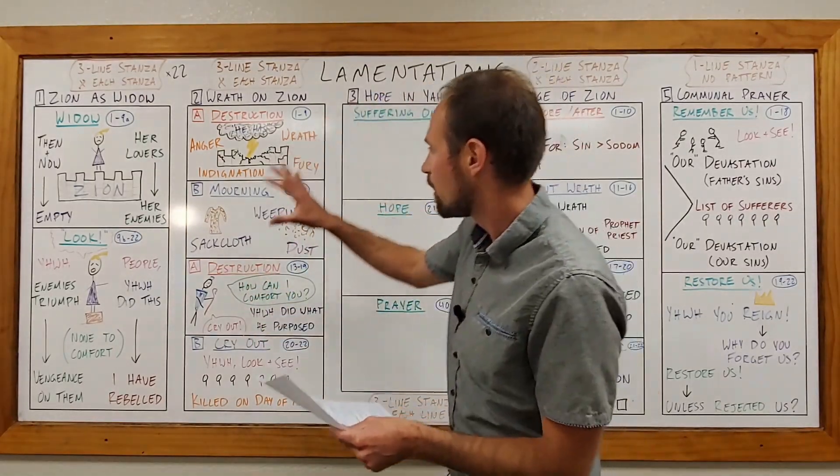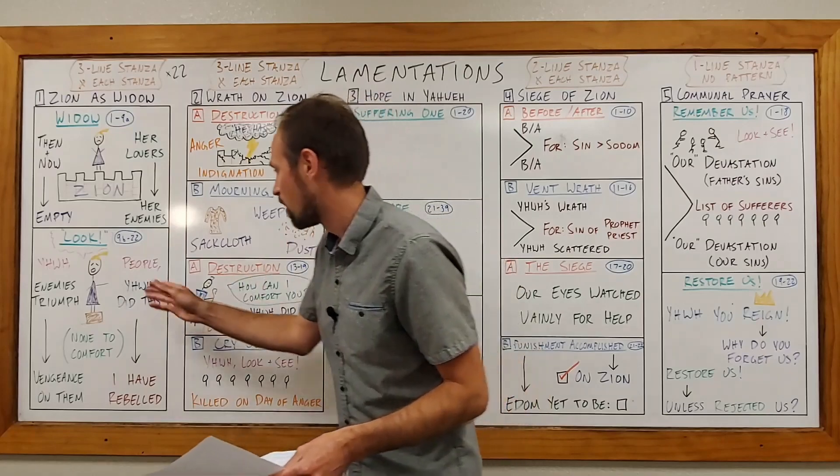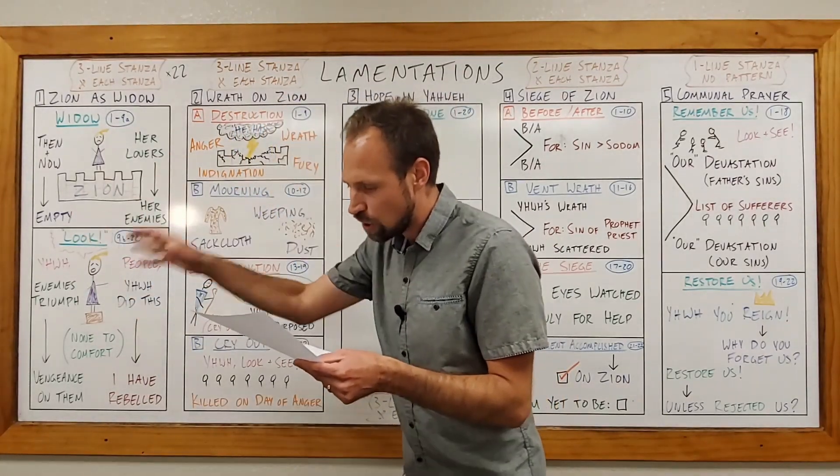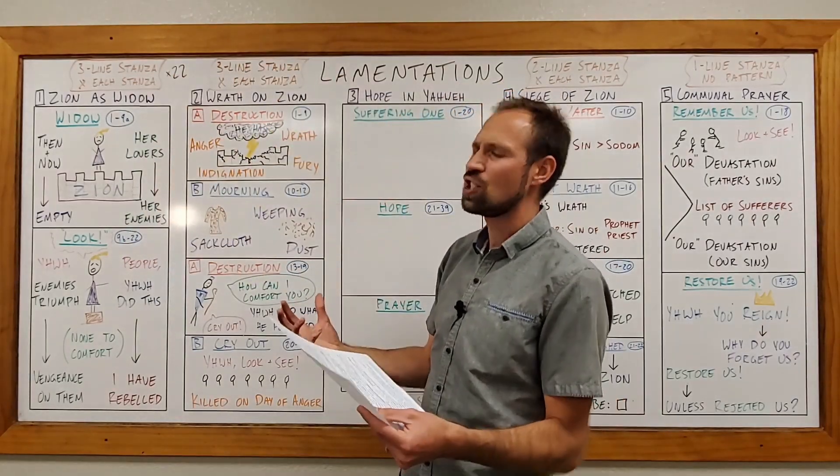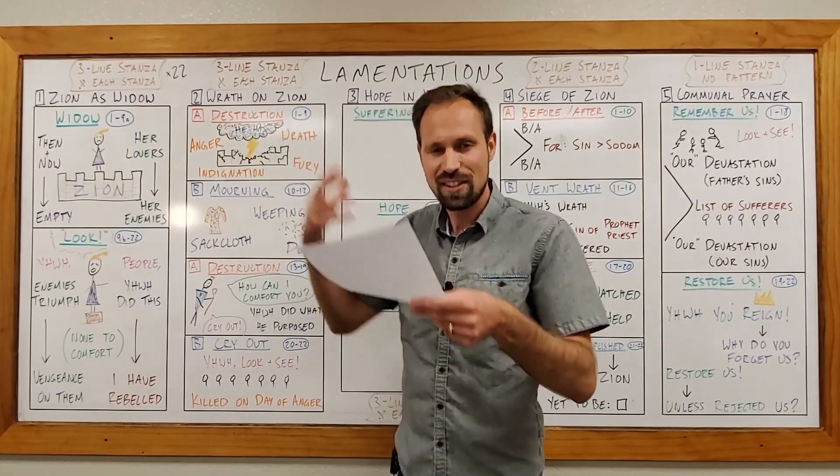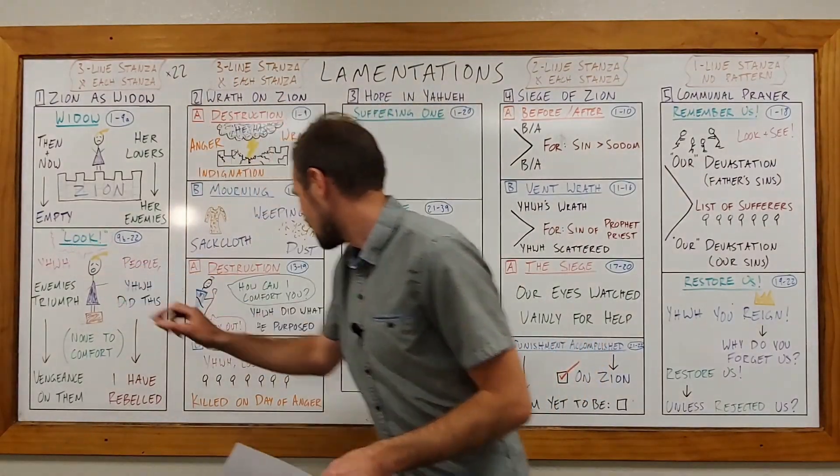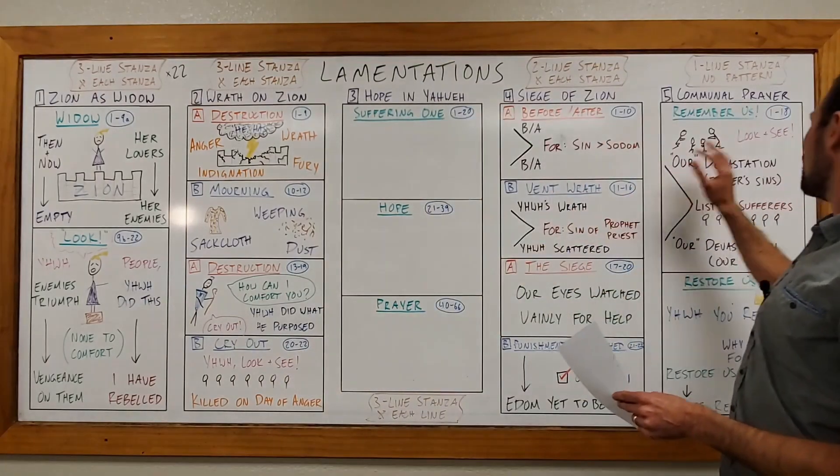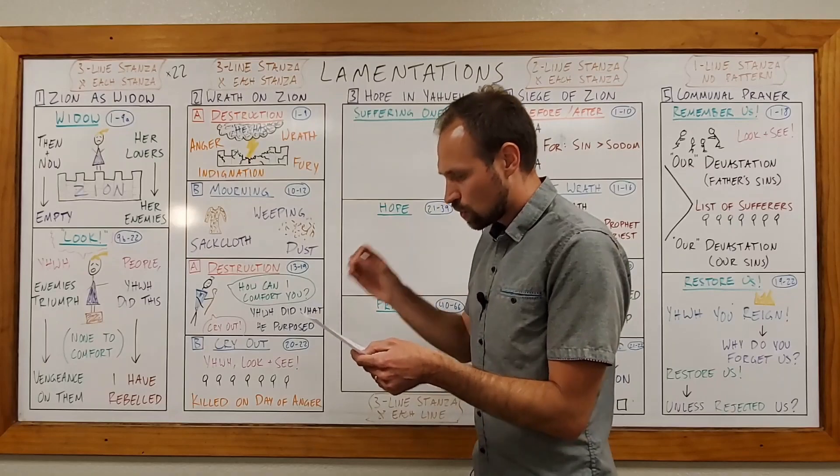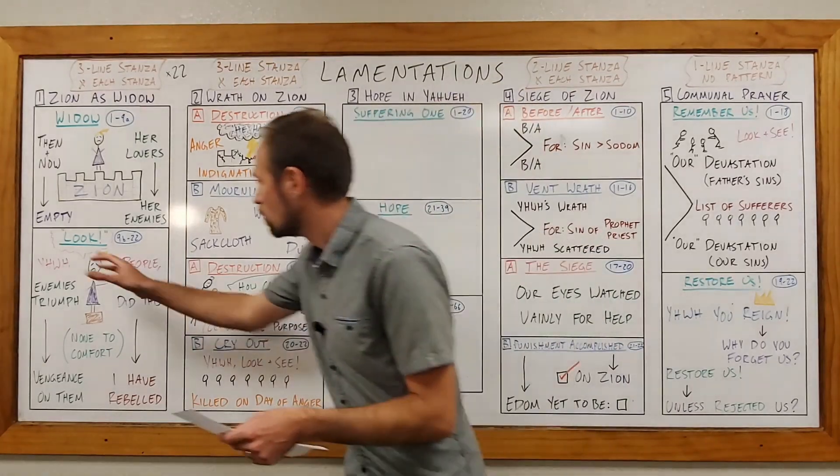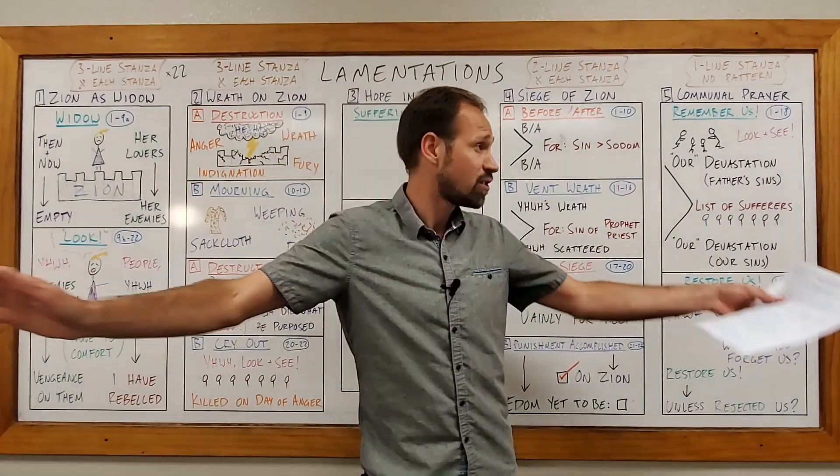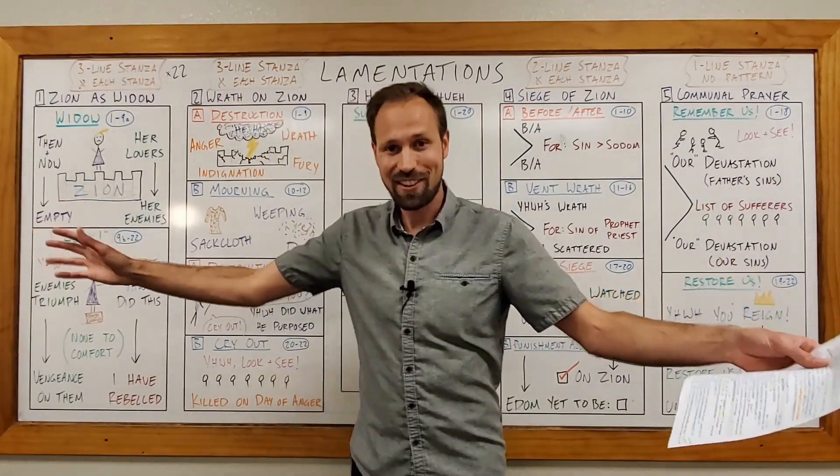Well, in verse 9, the poet is going to put words in the mouth of Lady Zion, and she is going to say, look, look, look and see, behold my affliction, she cries out. And this call to look, to behold, to see, is going to be repeated seven times in the book of Lamentations. So, fancy that. Well, she's going to first call out for Yahweh to look and see. My enemies have triumphed over me, she cries.